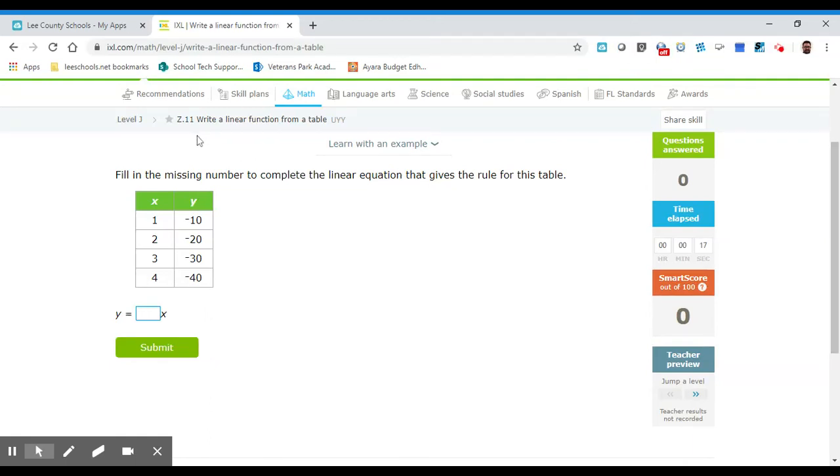The activity we are working on is called write a linear function from a table. In the beginning here, we can take our x value and plug it in here and figure out what we're multiplying to get our answer. So if I put 1 here, something times 1 gives me negative 10, and the answer is negative 10. Negative 10 times 1 gives you negative 10.